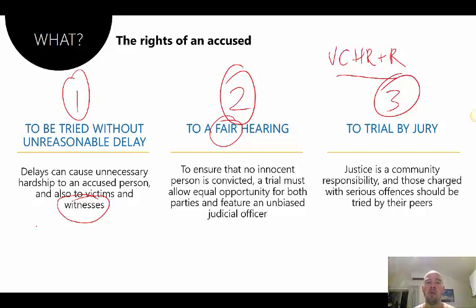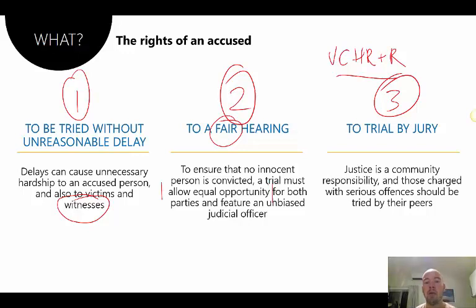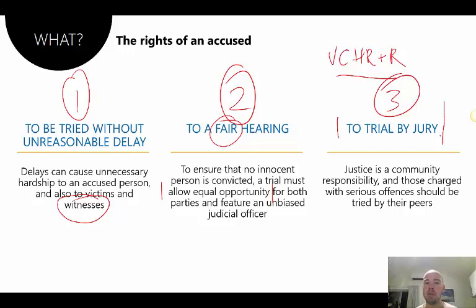The right to a fair hearing ensures that no innocent person is wrongly convicted, and we have the standard of proof — beyond reasonable doubt — to safeguard against that. This is where we talk about having an impartial judge, which dials into fairness, one of our principles of justice. The impartial judge allows equal opportunity for both parties to present their side, so neither party has an unfair advantage. The right to a trial by jury is only for indictable offences — the more serious offences — based on the concept that justice is a community responsibility.